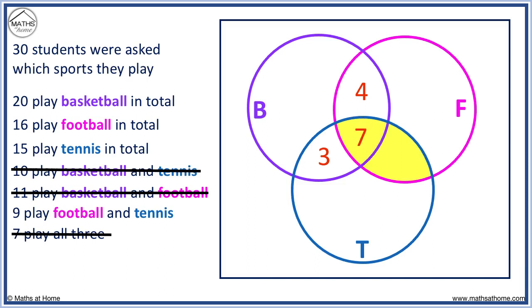We have 7 and need 2 more to make 9. Now we have looked at all overlap regions of two sports. Now we look at totals of each individual sport.